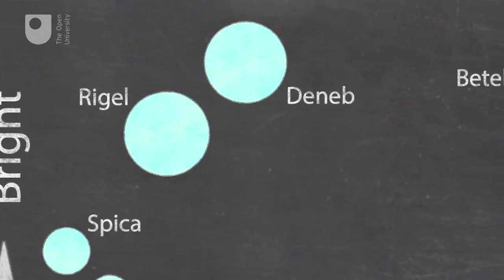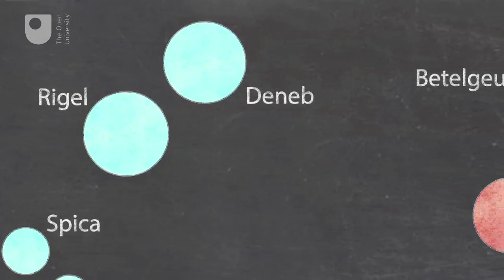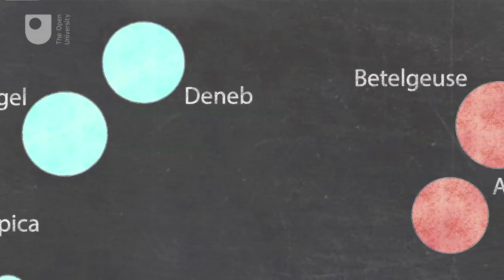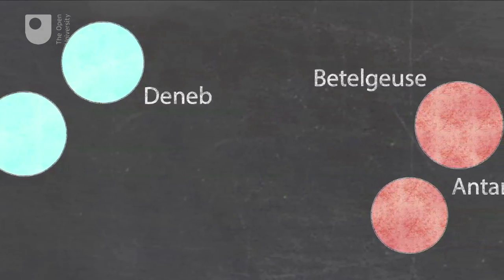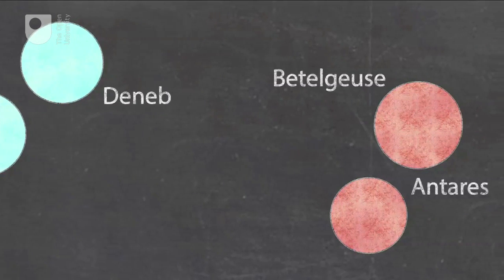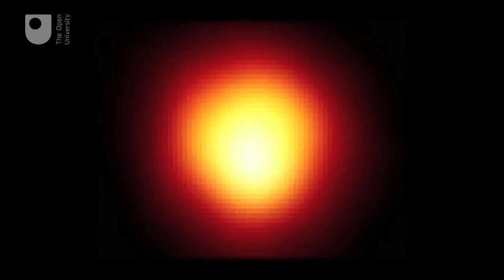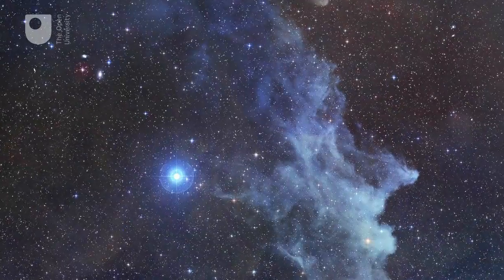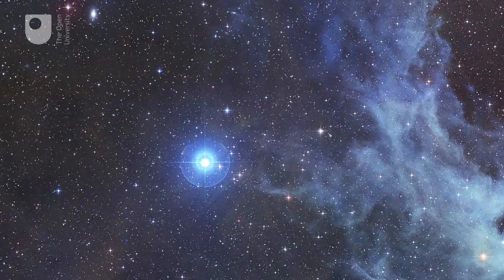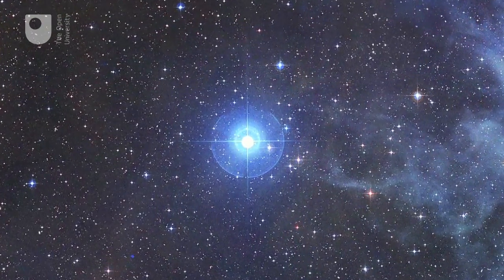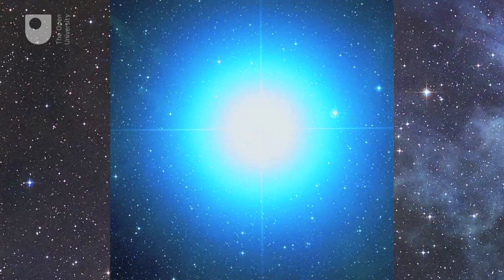Stretching across the upper regions of the Hertzsprung-Russell diagram are the supergiants, which cover a wide range of temperatures. These stars are truly enormous. Placed in the centre of our solar system, the largest of these — such as the red supergiant Betelgeuse in Orion — would engulf all the planets out to the orbit of Saturn. Like Betelgeuse, Rigel in the Orion constellation is also a supergiant, but it is a blue-white supergiant.